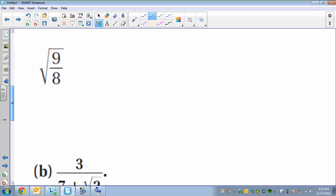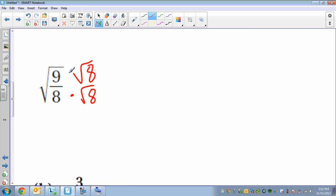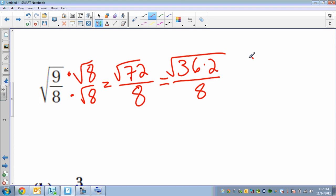Next one, again, multiply by the same thing as the bottom. So we get the square root of 72 and 8 on the bottom. This number on top is a lot bigger than we'd like, we can simplify this. We want to break 72 up into 36 times 2 over 8. The square root of 36 is 6, and then those can reduce to our final answer.